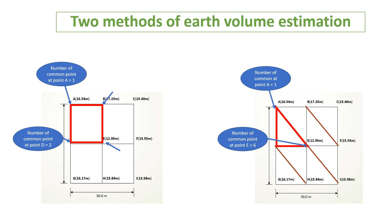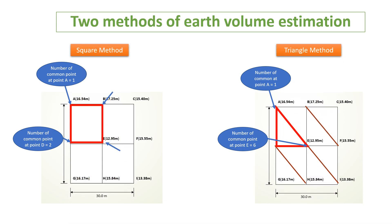There are two methods of earth volume estimation in this chapter, which are the square method and the triangle method. The number of common points, rectangular or triangle, are calculated by counting common points at intersecting grids.